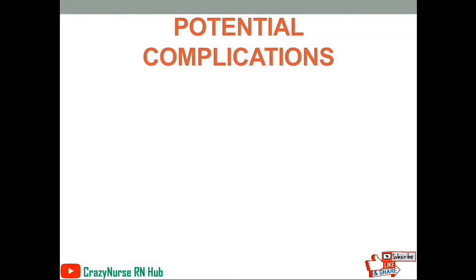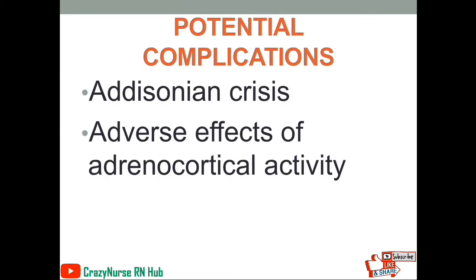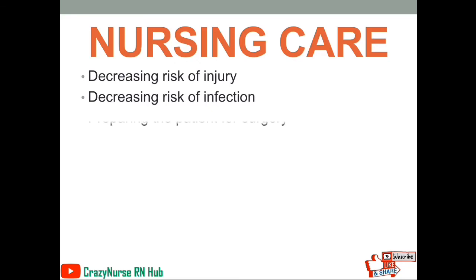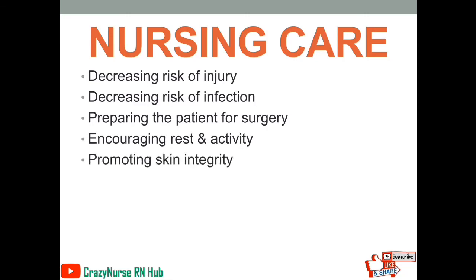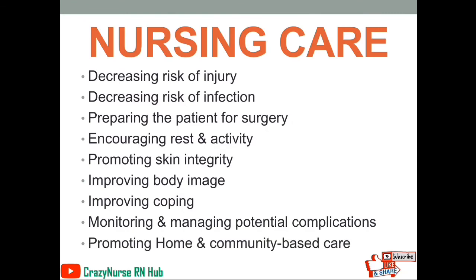Potential complications of Cushing's syndrome include Addisonian crisis — since the patient is receiving treatment to decrease steroid hormones, it might cause Addisonian crisis — and adverse effects of adrenocortical activity. For nursing care, we decrease risk of injury, decrease risk of infection, prepare the patient for possible surgery, encourage rest and activity, promote skin integrity, improve body image, improve coping, monitor and manage potential complications, and promote home and community-based care.